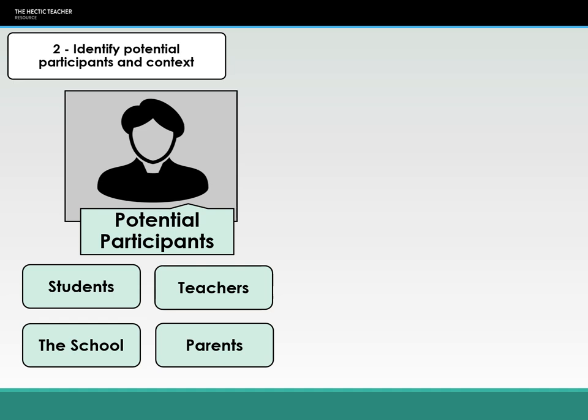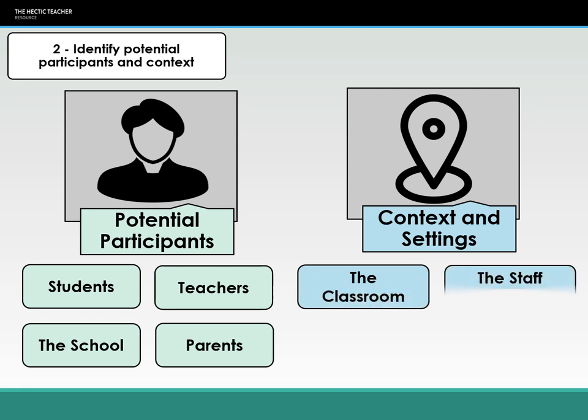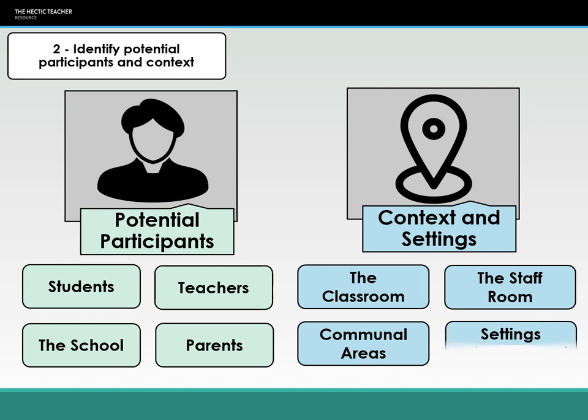The participants link into the context of your research. There is an assumption that because the research is taking place in a school, the school is going to be the context — and that might be the case for a majority of research into education, but not always. You also need to think about where in the school would be the best place to get your data from — it could be the classroom, the staffroom, communal areas such as playgrounds or corridors. But it could also be outside of school, particularly if your potential participants are the parents. You can access the parents without involving the school, so you would not use the school as your context.